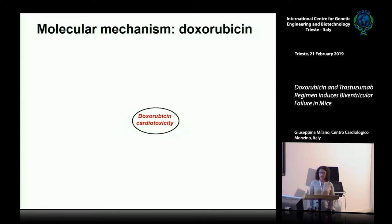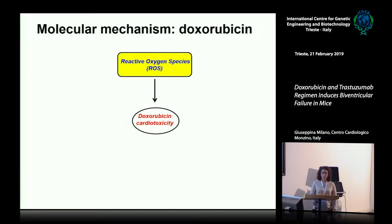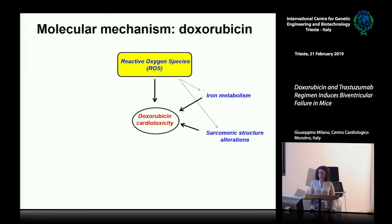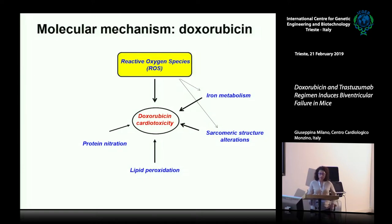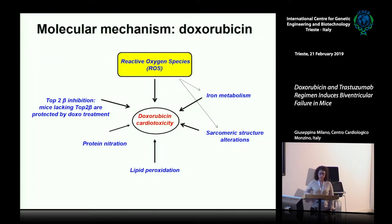Cardiotoxicity induced by Doxorubicine is complex and not yet well understood. The generation of reactive oxygen species (ROS) plays a fundamental role in this disease. ROS induces changes in iron metabolism, alterations in the sarcomeric structure, protein and lipid oxidation, and most recently, Doxorubicine has been shown to induce DNA damage by interacting with topoisomerase beta 2.